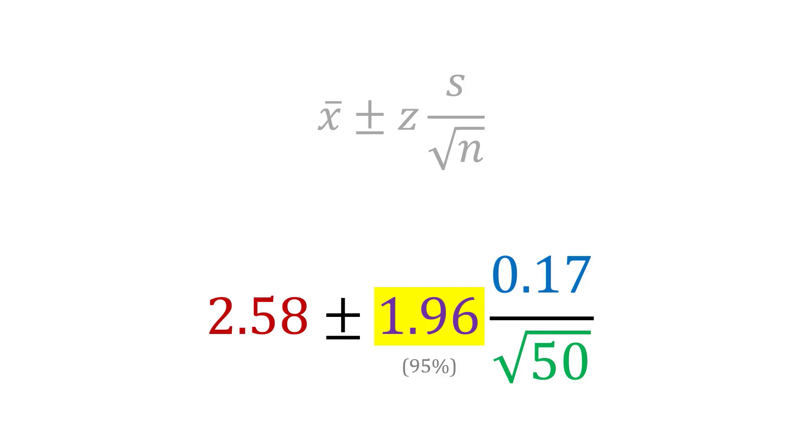And then all that we've got to do to add to this is our z value, which is 1.96 in this case, if we're talking about a 95% confidence level.